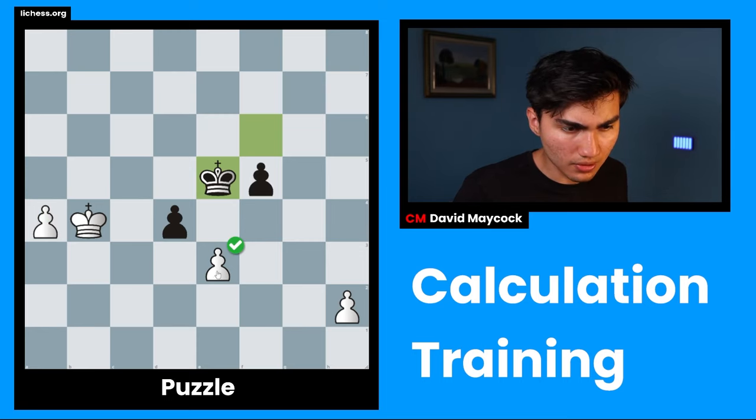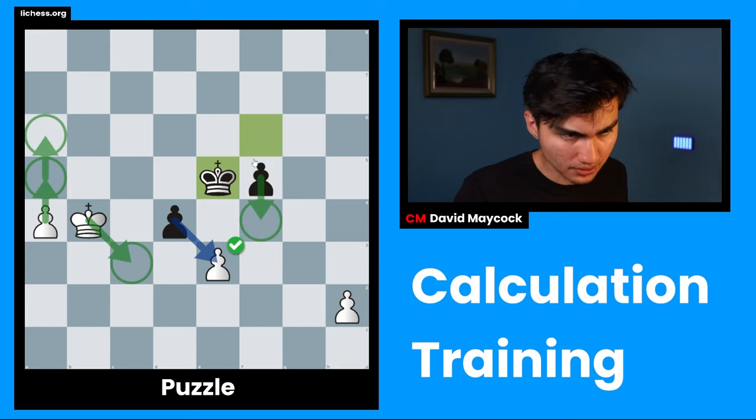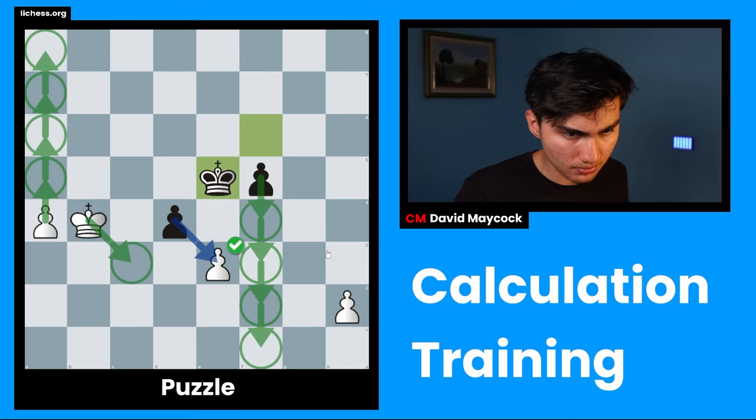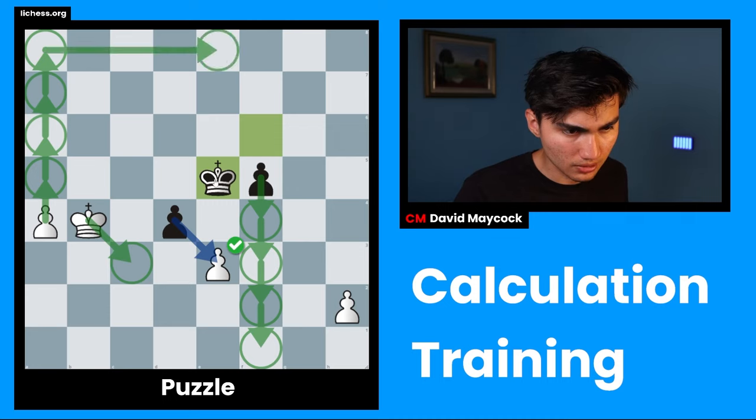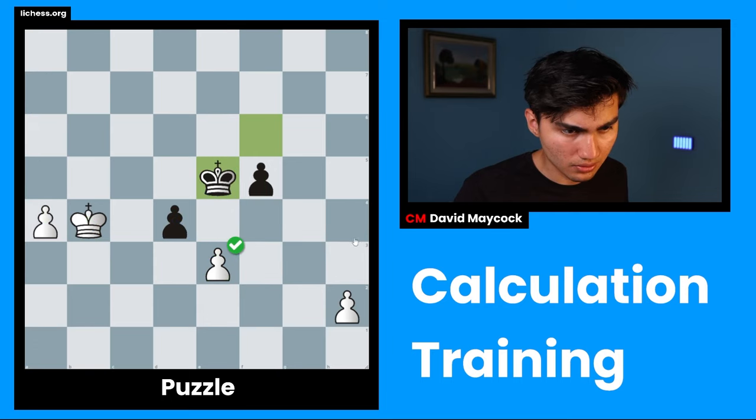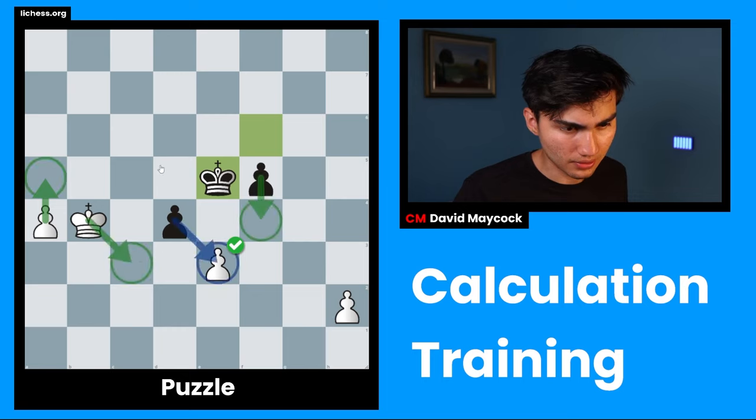So, a5, I want to look at a5 because it looks pretty forcing. So, what happens? d takes, king c3 is forced there because if not, e2 is there. So, a5 takes, king c3. What is going on there? What if black makes a silly move or like f4? Play a6, f3, a7, f2, a8, f1. And this is a draw. Queen e8, king d5, king c3. Is this a draw? Probably, yeah. So, a5, d takes, king c3, f4 seems to be drawing.